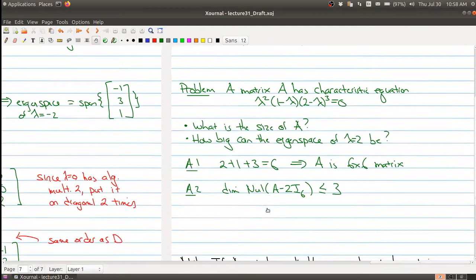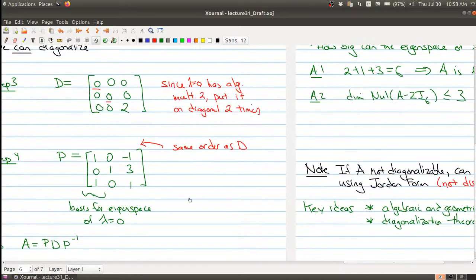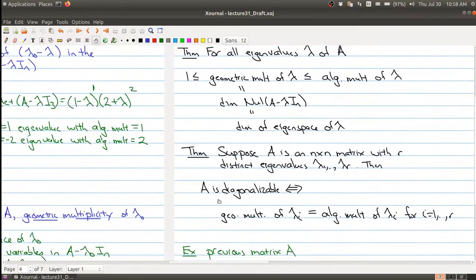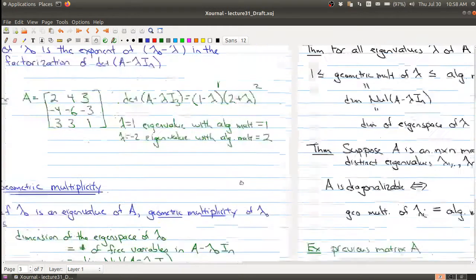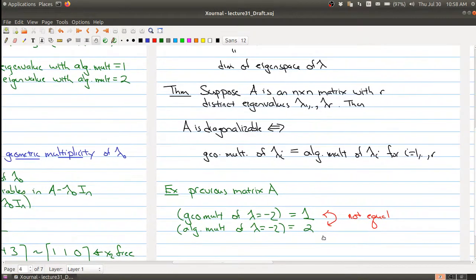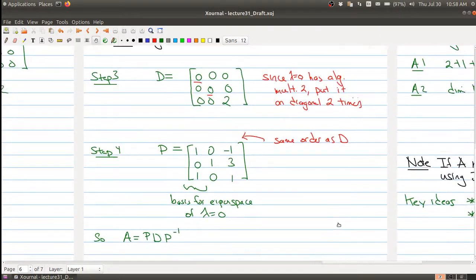Now in some ways this ends our discussion of diagonalization, but you'll notice that there are going to be matrices that are not diagonalizable. We actually had one example going way back over here. This matrix here was not diagonalizable because the geometric multiplicity of one of its eigenvalues did not equal its algebraic multiplicity.